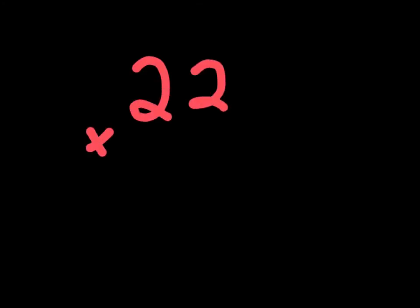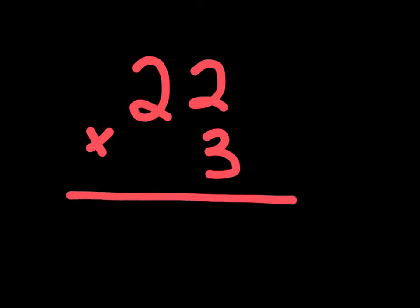So, let's say we have a question that's exactly the same one as before, 22 times 3. What we have to do is we have to make two pathways, because we have a number here and a number there. So, our two pathways would be from the 3 to the 2, and then from the 3 to the other 2.